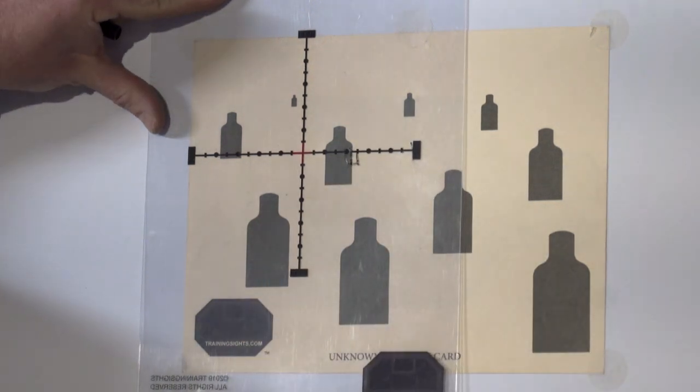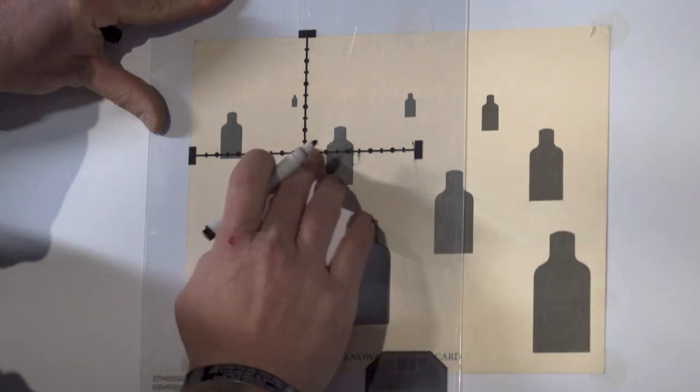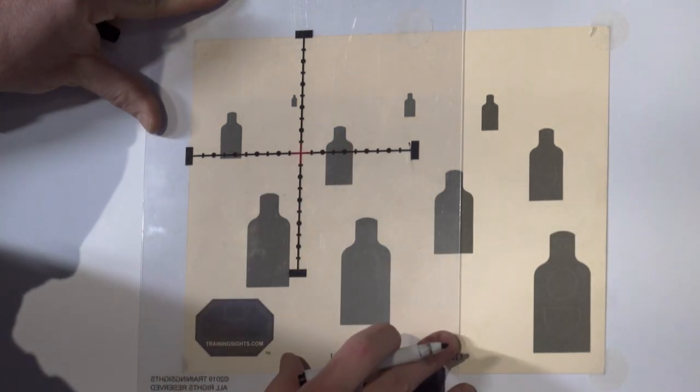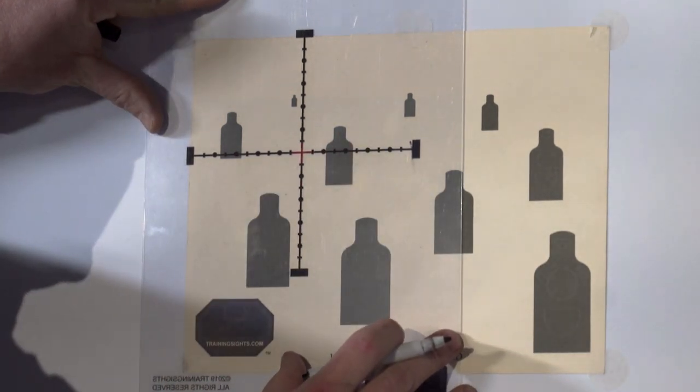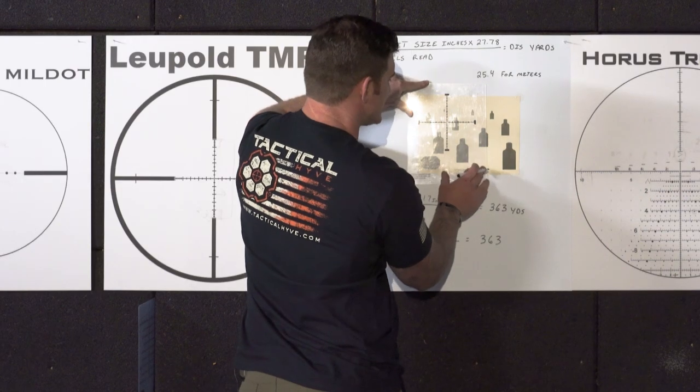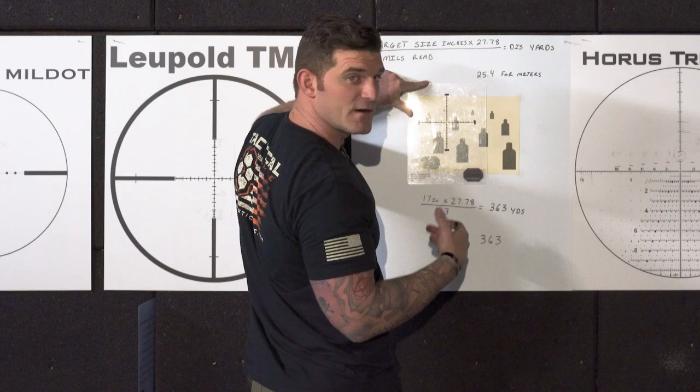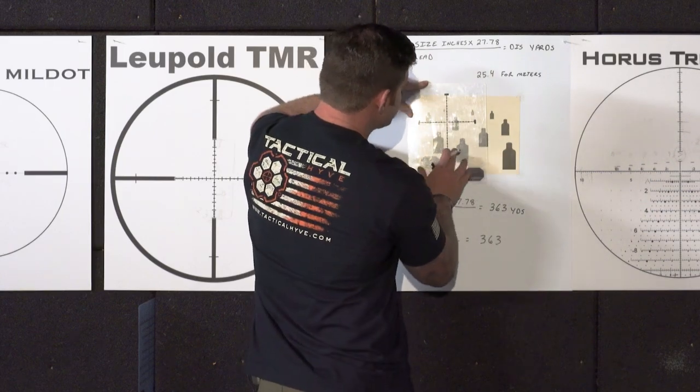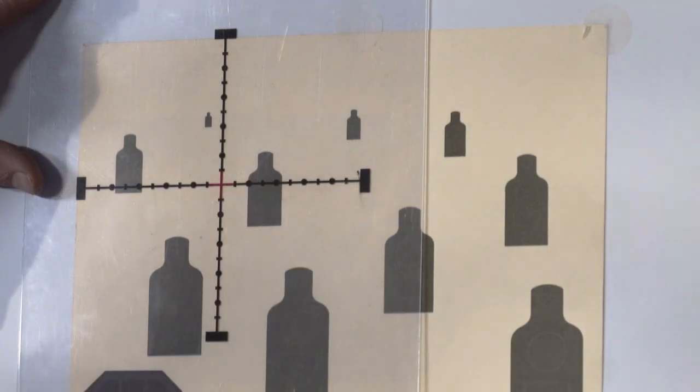But where it gets tricky is whenever we're kind of just floating out here where it's like, is that a 1.45 or is that a 1.4? All those little numbers matter, especially one of your farther ranges.